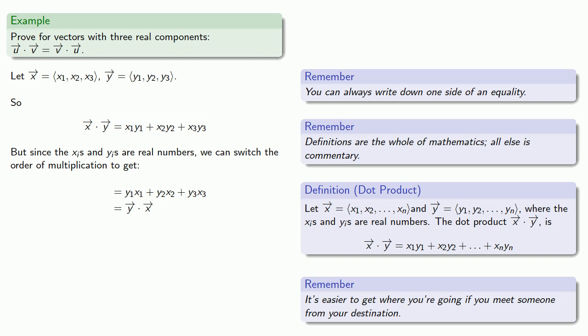So, let's check it out. We have two vectors with three components. We find their dot product. Because the components are real numbers, we can switch the order of multiplication and rewrite the dot product. But this is just the dot product of Y and X. So, our proof is a good one.